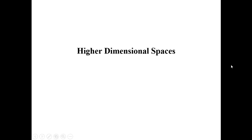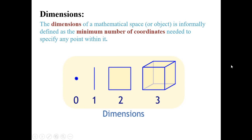In the last lesson, in the definition of tensors, we saw the term m-dimensional spaces where m varies from 0, 1, 2, 3 and so on. In that context, we discuss higher dimensional spaces here. The dimension of a mathematical space or object is informally defined as the minimum number of coordinates needed to specify any point within it.